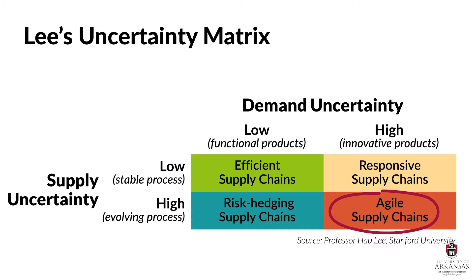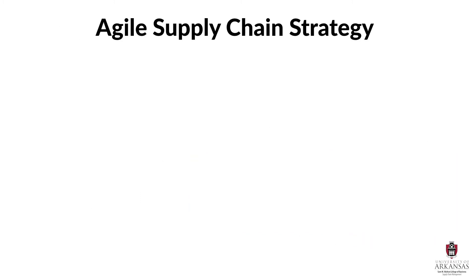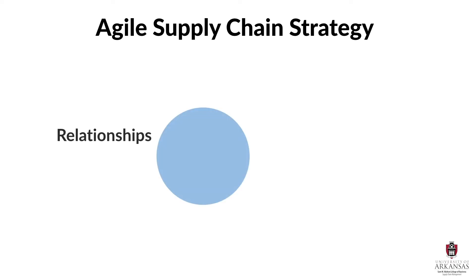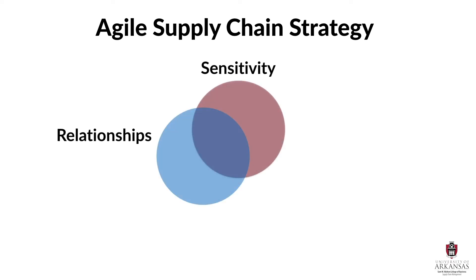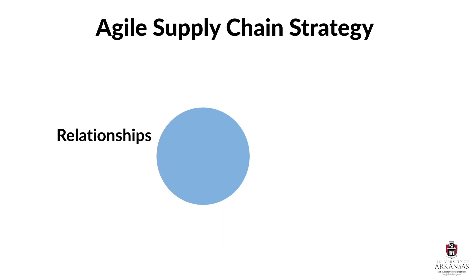And that's a good place to start, but an agile supply chain strategy involves more than just combining risk hedging with responsiveness. An agile supply chain strategy also involves the intersection of key relationships, sensitivity, processes, information, and flexibility. Let's talk about each of these areas in more detail, starting with relationships.